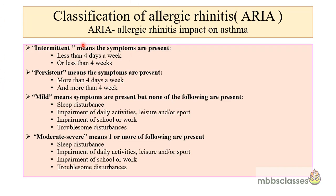According to the ARIA guidelines, intermittent means the symptoms are present less than four days a week or less than four weeks. Persistent means when the symptoms are present more than four days a week and more than four weeks. The symptoms are called mild when runny nose, itching and sneezing are present but none of the following: no sleep disturbance, no impairment of daily activities, no impairment of school work and no troublesome symptoms. It is called moderate to severe when one or more of the following is present: sleep disturbance, impairment of daily activities, school and work.